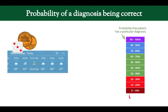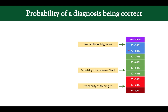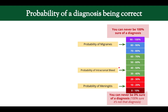But now let's look at probability for diagnoses. Probability goes from zero to 100, and you can have the probability that a particular patient has a diagnosis anywhere in that range. Let's say we have a person with headaches. Here are the diagnoses we're considering: migraines, intracranial bleed, and meningitis. I think there's an 87% chance this person has migraines, a 41% chance they have an intracranial bleed, and an 11–12% chance they have meningitis. Now, you can never be 100% or 0% sure of a diagnosis in medicine, because unlike dice, there are too many variables.